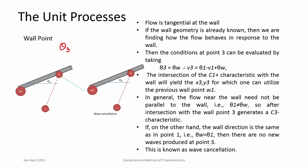For the C plus characteristic arriving at the wall, the compatibility condition is: theta3 minus nu3 equals theta1 minus nu1. With theta3 set equal to theta_wall (since flow must be tangential to the wall), we can solve this equation for nu3 and hence m3.